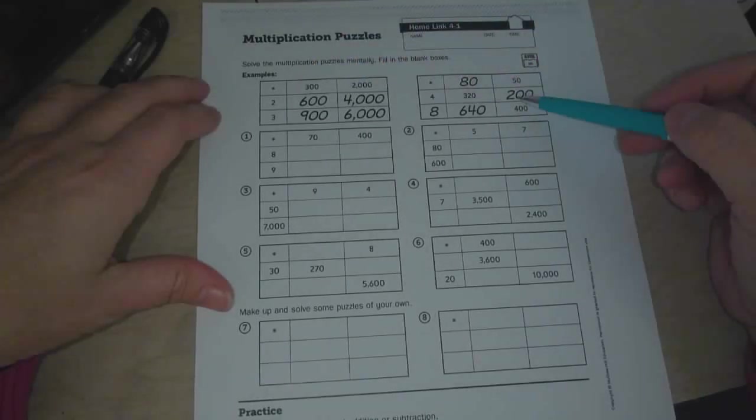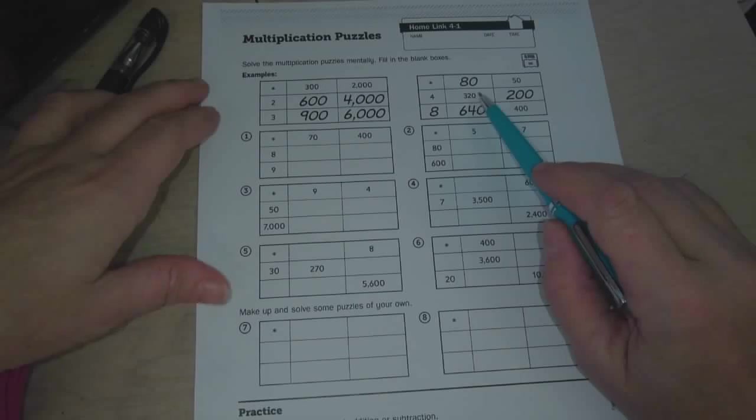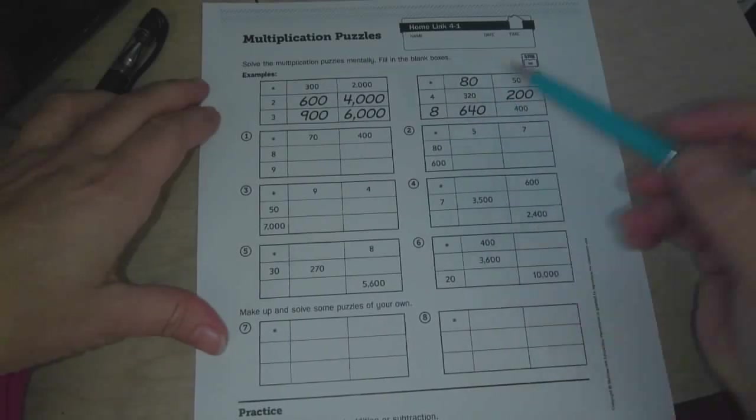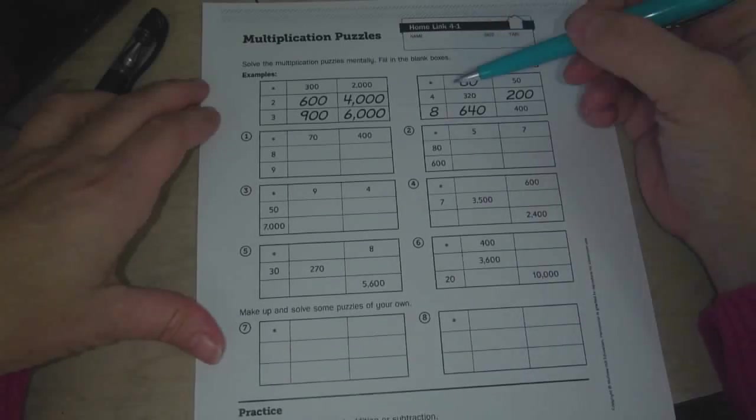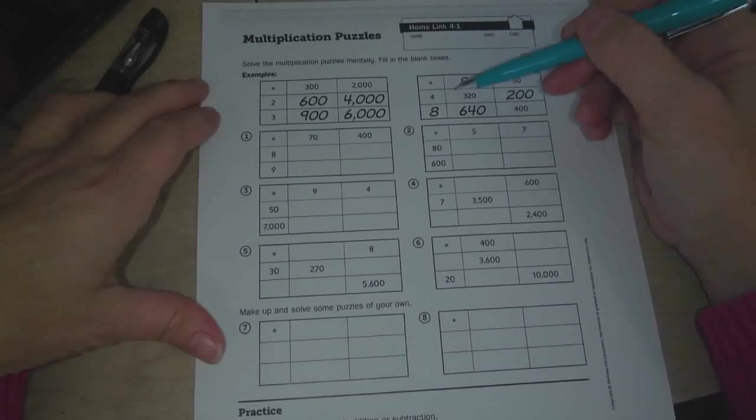And in this one, they give you a couple of the answers inside the chart, and then you have to figure out what goes on the outside. So you would ask yourself, 4 times what equals 320? Of course the answer is 80.